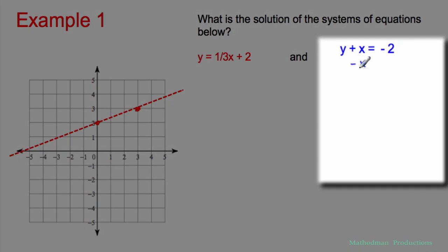Let's subtract an x to both sides to have y all by itself. Y drops down, equals negative two, minus x. I always tell my students to put a one there if there's no slope. That way you know that the slope's negative one.